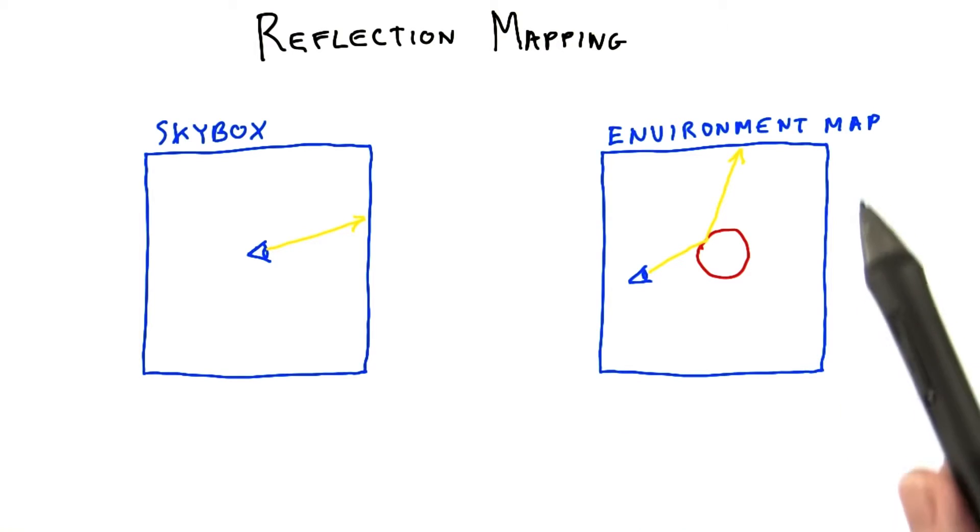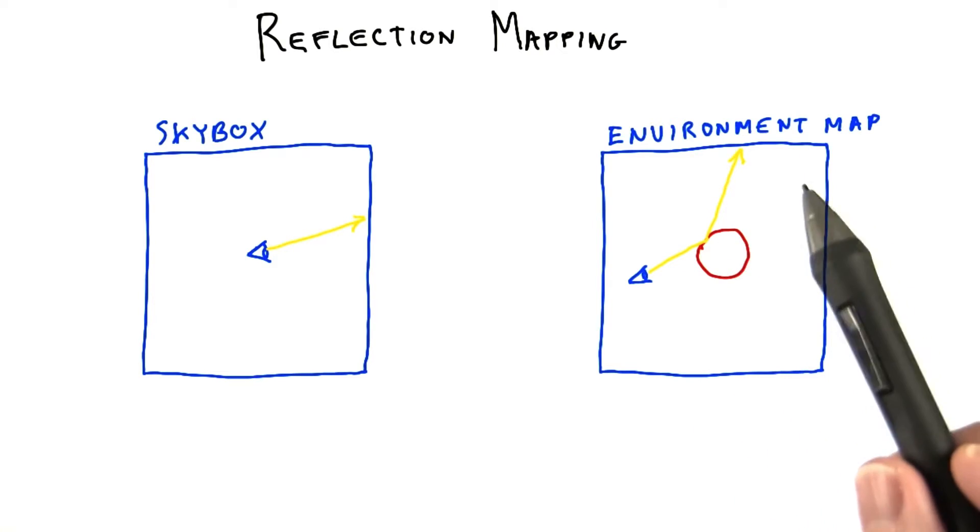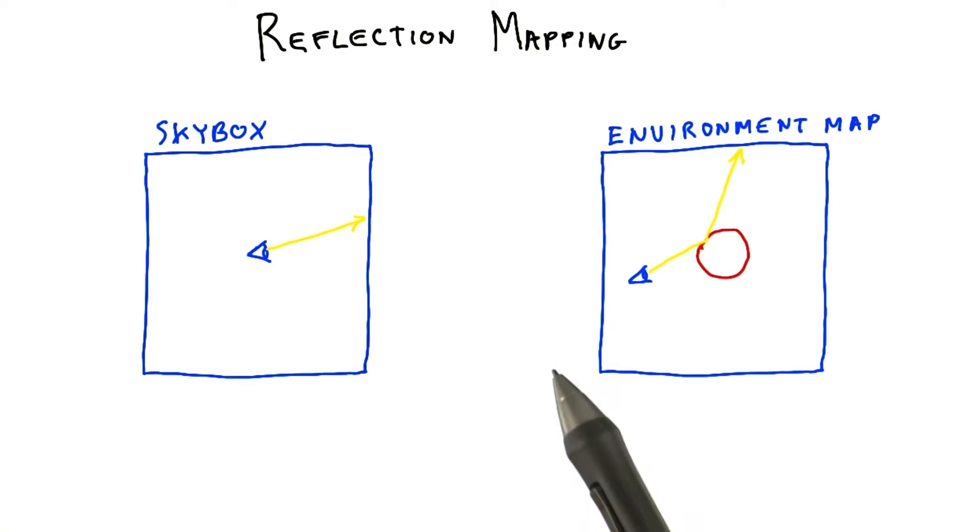This is called the environment map. The illumination process is a bit like ray tracing, where a ray is reflected off a shiny surface and picks up a color of any reflected objects. The difference is that there's only one simple object to reflect, typically a cube map.